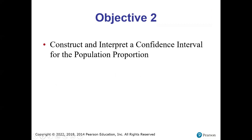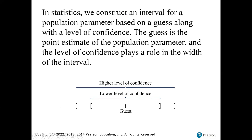How do we use that to construct what is called a confidence interval for the population proportion? In statistics, we are going to construct an interval for a population parameter based on a guess along with a level of confidence. The guess comes from our survey — it's not randomly pulled from thin air. We've conducted a survey and we get a point estimate, a proportion found from our survey, and that's in the middle.